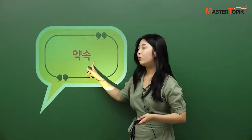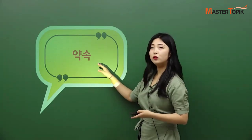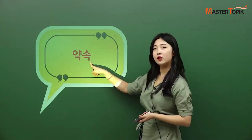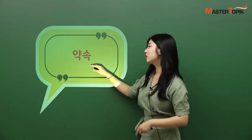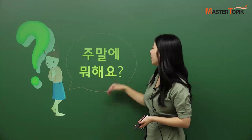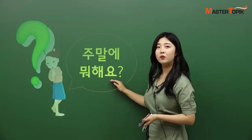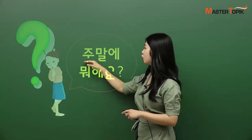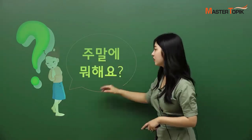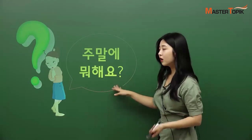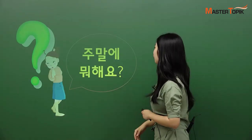Now, we want to make plans to meet our friends on weekends. So, we have to make a 약속 — plans. You're going to learn about how to make 약속 in Korean. 주말에 뭐해요? Can you guess the meaning? 주말 — weekends. 주말에 — on weekends. 뭐해요? — What do you do? What do you do on weekends, or what are you up to this weekend?